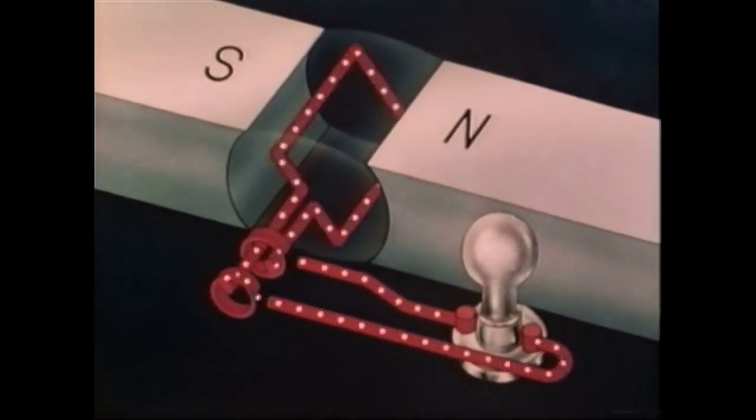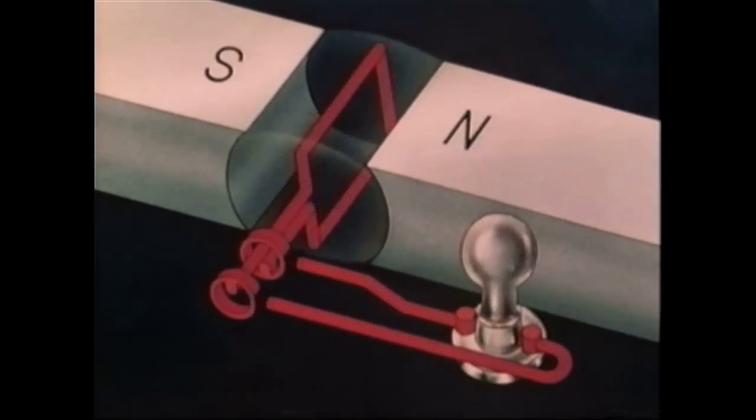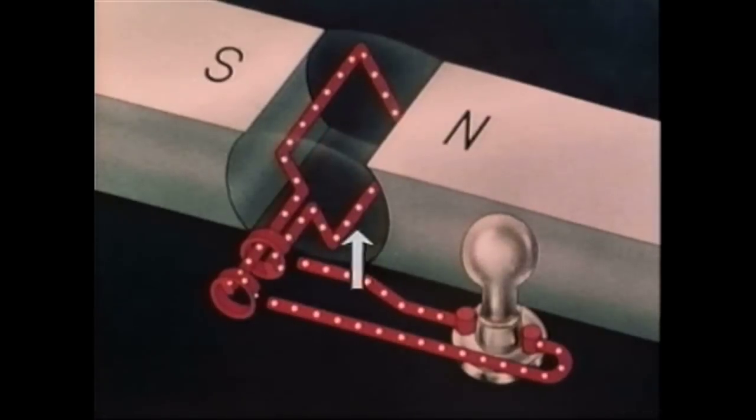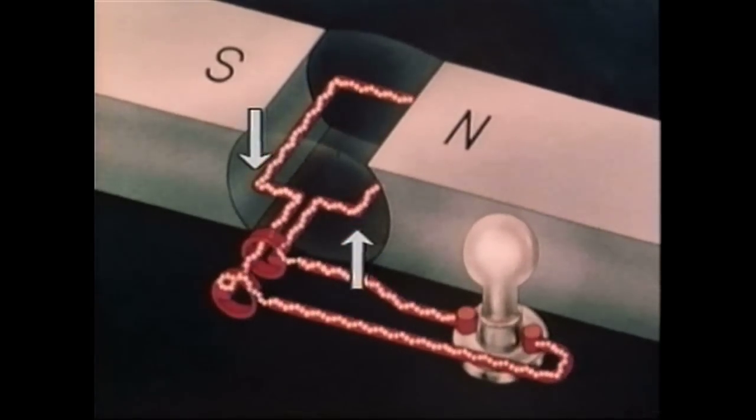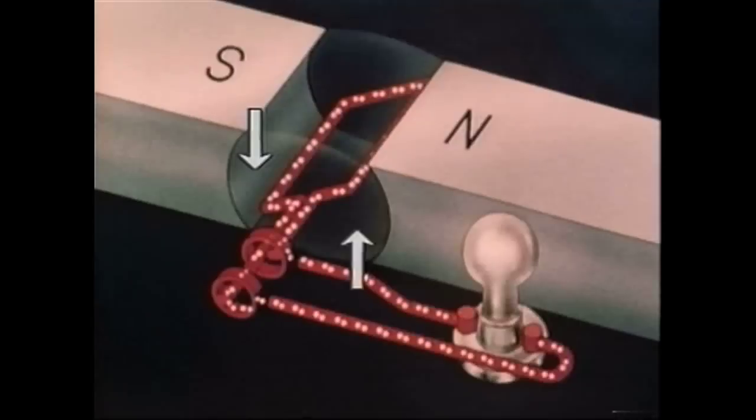After the coil passes through the position of no current flow, the previous downward side moves up and the previous upward side moves down, thus reversing the current flow in the external circuit.